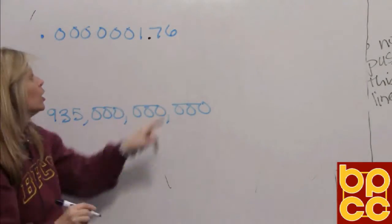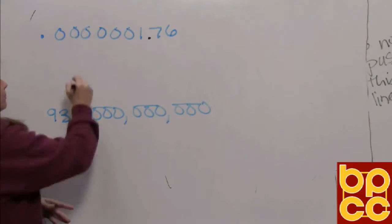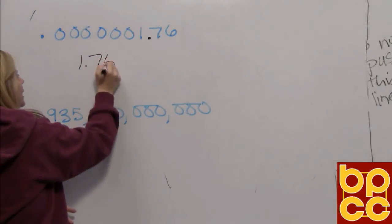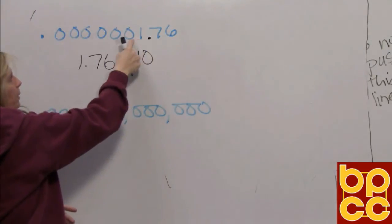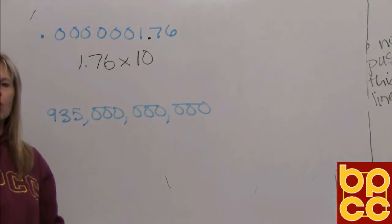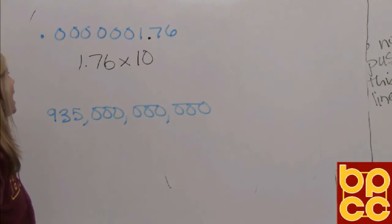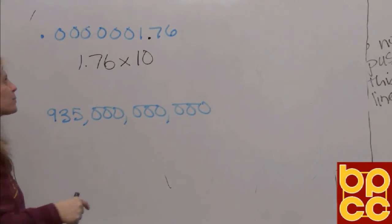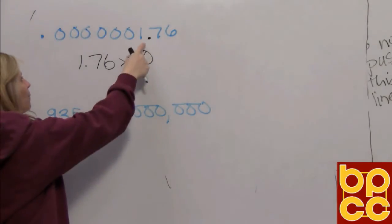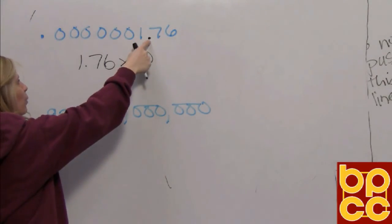Then you'll write times ten, because as we move along our place values in our number system, we move in groups of ten. And then we would figure out the exponent. To figure out the exponent, you just have to count how many place values you move that point to get it back to where it originally was.